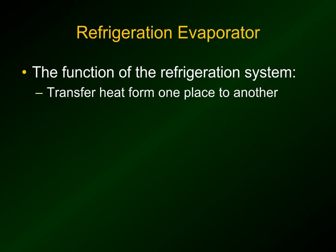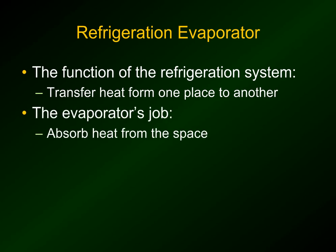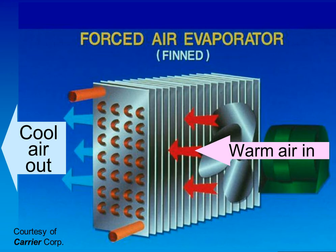The function of the refrigeration system is to transfer heat from one place to another — specifically from a place where it's not wanted to a place where it really doesn't matter. The evaporator's job in this system is to absorb the heat from the space where you don't want the heat. In this case, it would be our freezer or refrigerator. Warm air comes into the evaporator coil in the cooler or the freezer, and the cool air comes out.